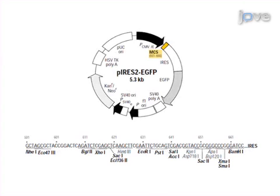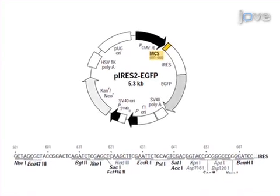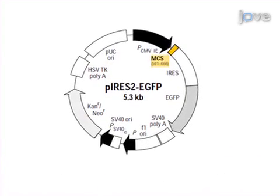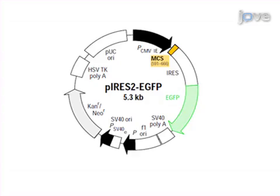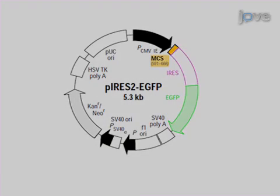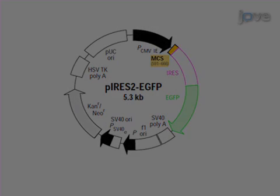Select an expression vector that is suitable for expression of transmembrane proteins and enables the cellular co-expression of the antigens and the green fluorescent protein separately. For example, this vector has an enhanced GFP reporter under the control of an internal ribosome entry site.